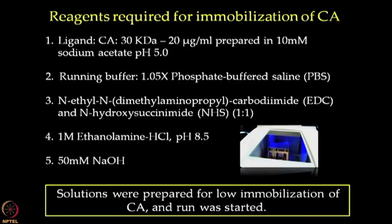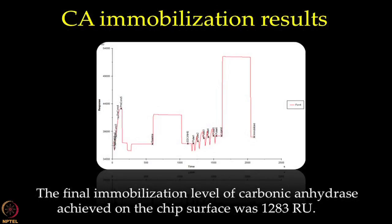After preparation of these samples and reagents, we transfer the sample tubes to the appropriate rack and start the run as shown for beta 2 microglobulin immobilization in earlier lectures. We will hence look at the immobilization results obtained from this run. Since it is recommended to use lower immobilization levels for kinetics assay compared to screening assays, we targeted an immobilization level of 1500 RU for carbonic anhydrase. As shown in the figure, the immobilization procedure resulted in final immobilization level of 1283 RUs.